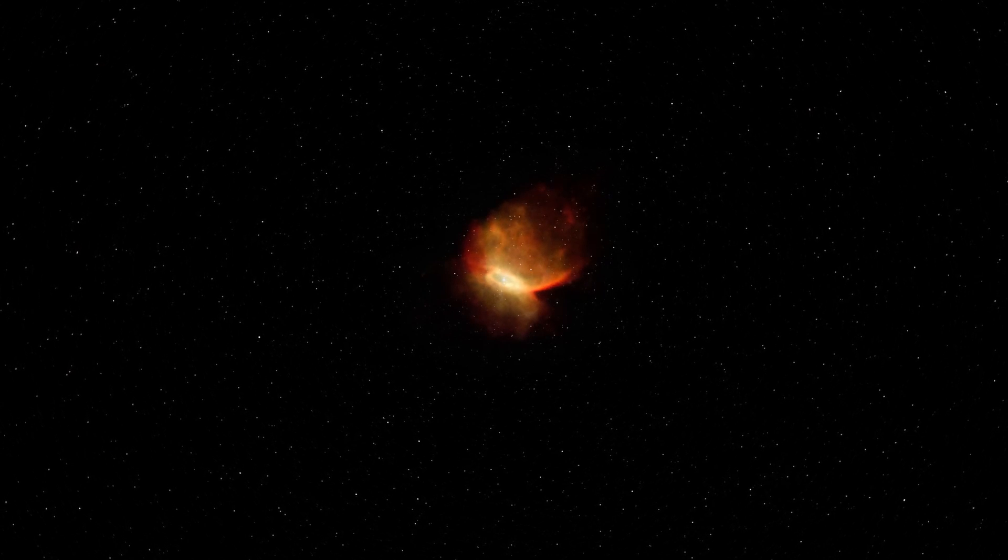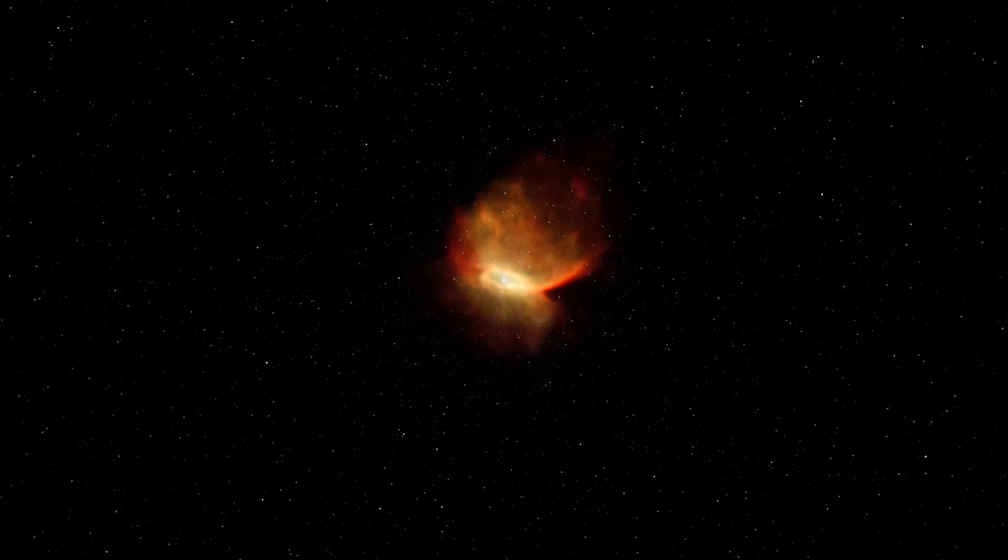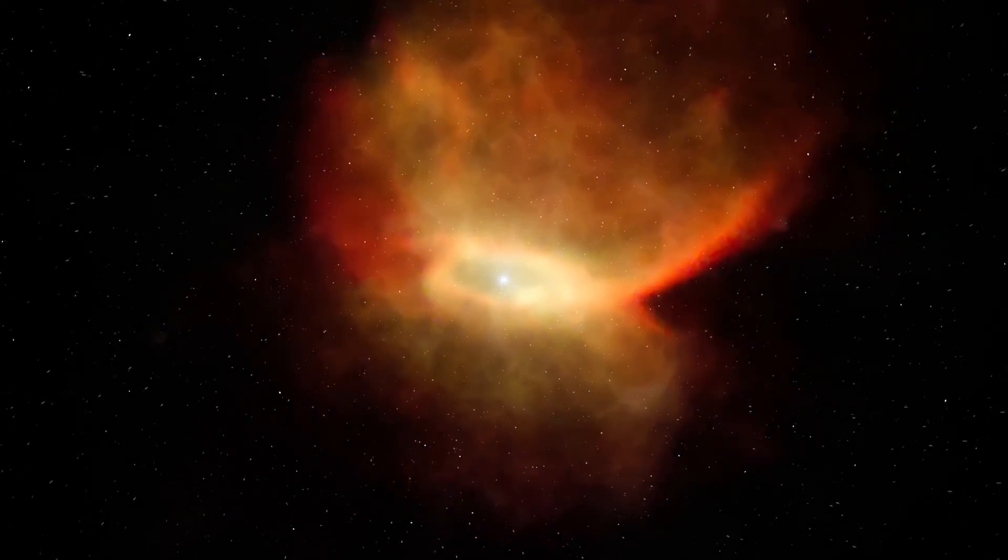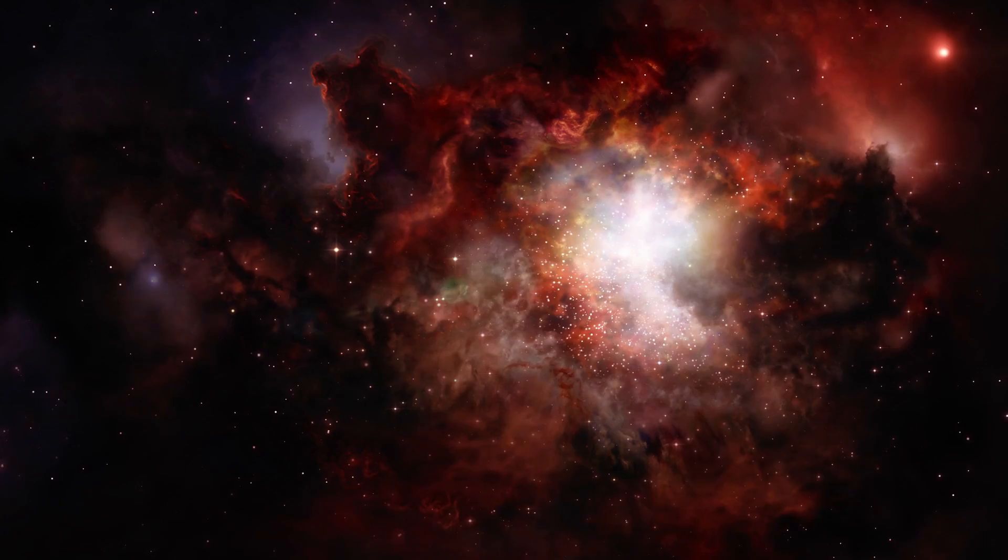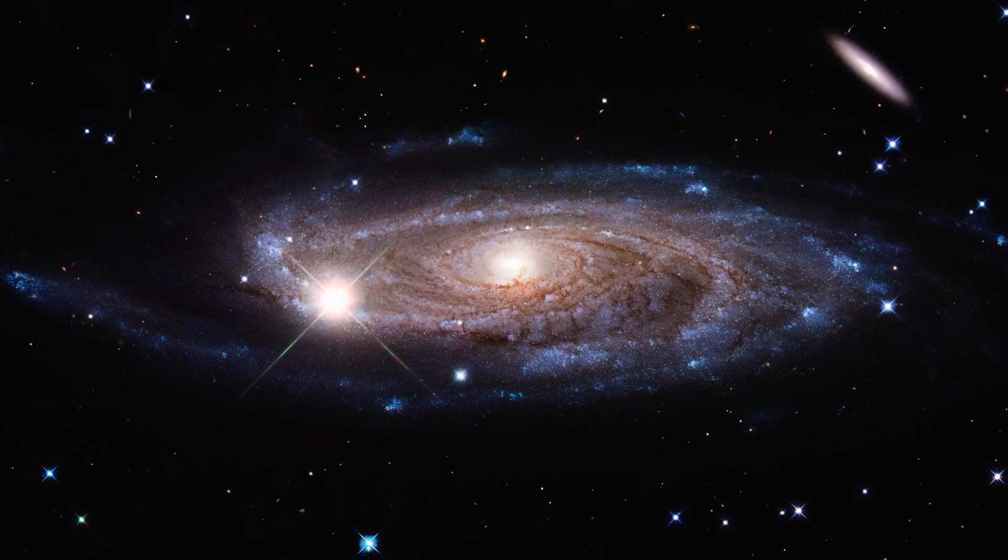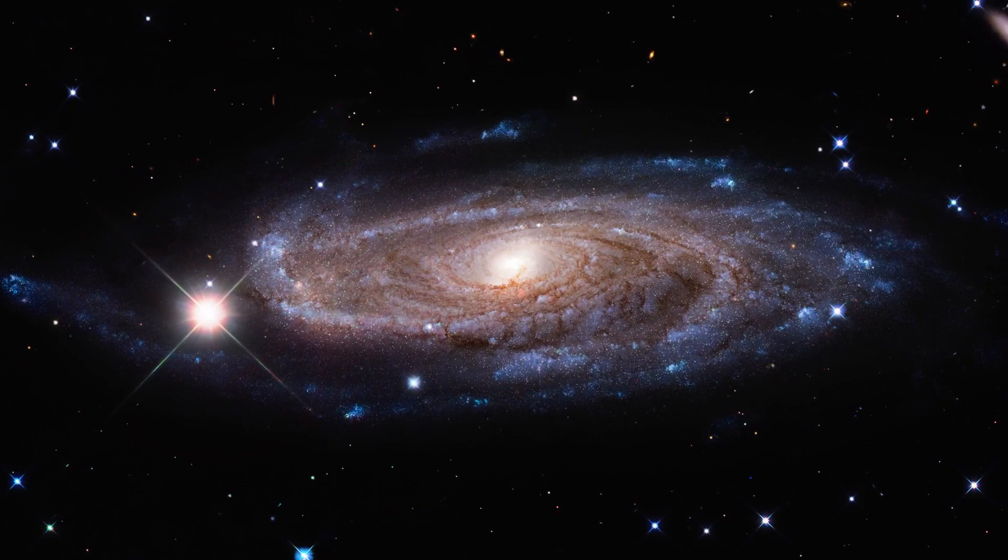We know it exists because it does have some effects on the visible universe, namely gravity. Although dark matter does not reflect, absorb or emit light, it does bend it. It's best to imagine that dark matter doesn't directly interfere with light itself, but rather the space around it.